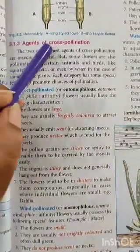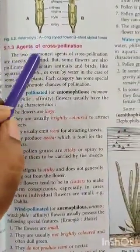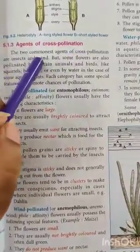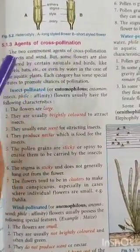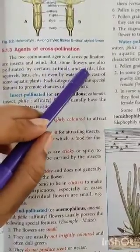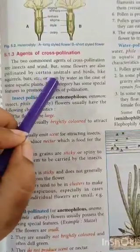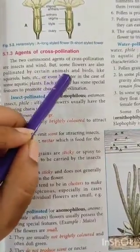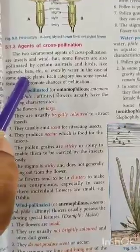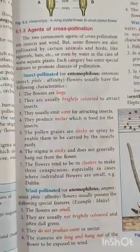Next we have agents of cross pollination. The two commonest agents of cross pollination are insects and wind. But in some flowers, pollination is done by animals and birds like squirrels, bats, and even by water in the case of aquatic plants. In our syllabus, we have only three categories.